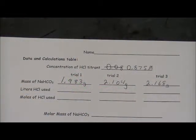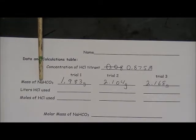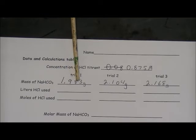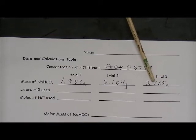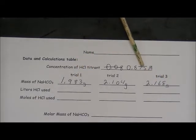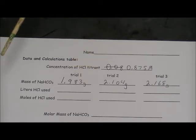Here is that information entered into our worksheet. The mass of sodium bicarbonate for the first sample, 1.983. For the second sample, 2.104. And for the third sample, 2.168. I've also entered the concentration of my titrant up here, 0.875 moles per liter HCl.